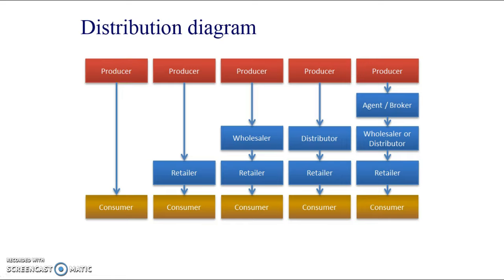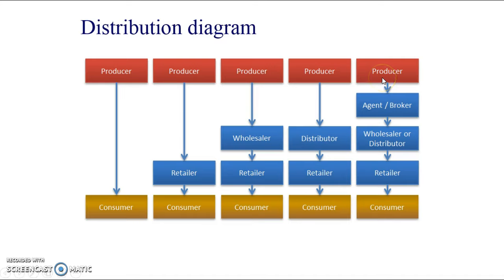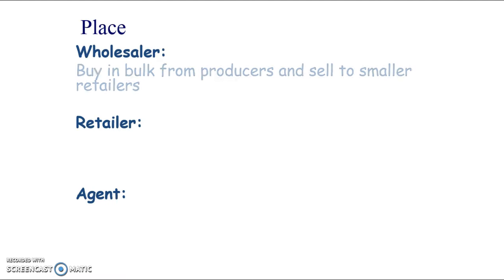Here is a distribution diagram showing different ways of getting a product to the consumer. Different businesses might use a mix of these. Some might sell directly to the customer — the direct method. Others go through a retail shop, either their own like Adidas, or others like Walmart/Asda for Coca-Cola. It could also go through a wholesaler who buys in bulk and sells to smaller shops, or through distributors or agents.